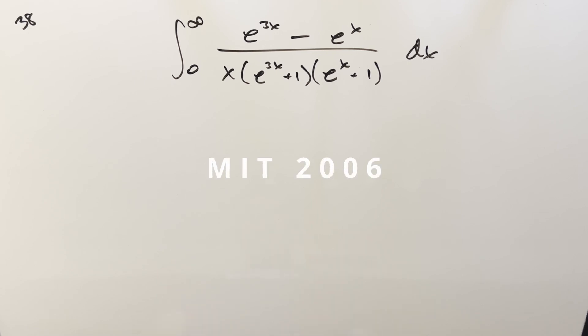Okay, we've got something really interesting here today from MIT 2006, number 38. We've got the integral from zero to infinity, e to the 3x minus e to the x over x times (e to the 3x plus 1) times (e to the x plus 1) dx.